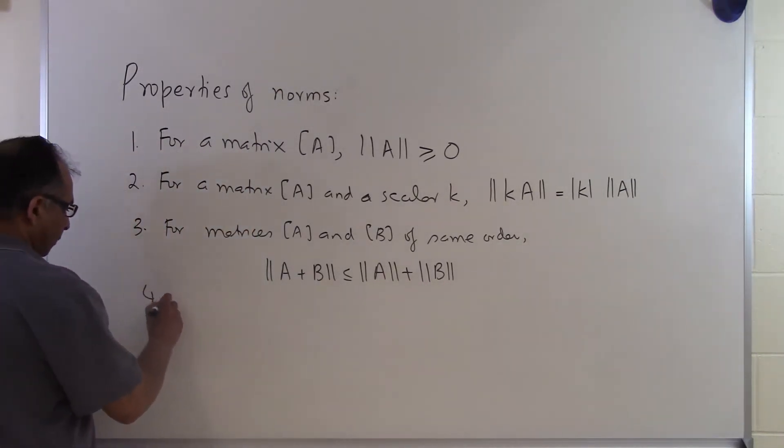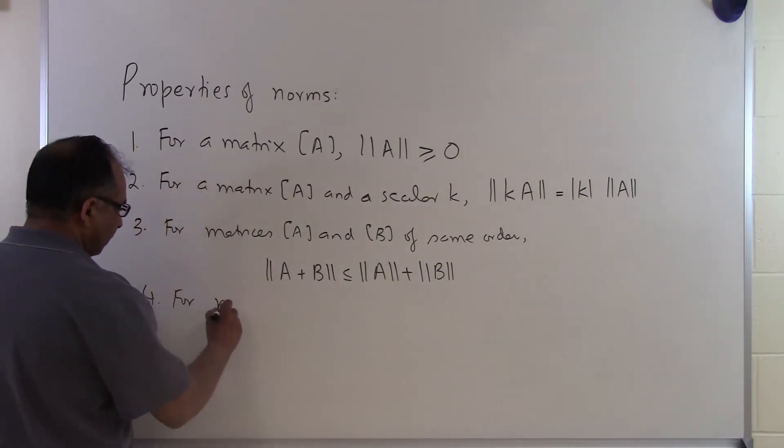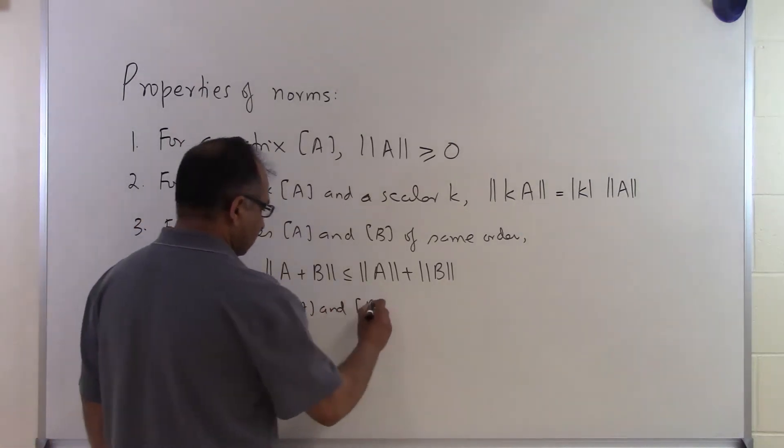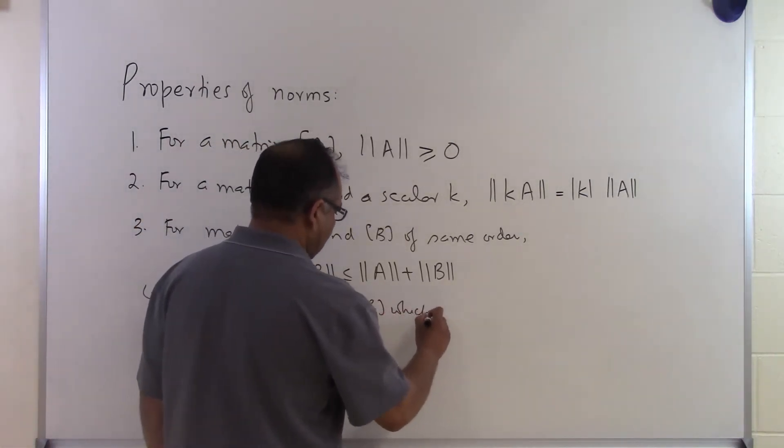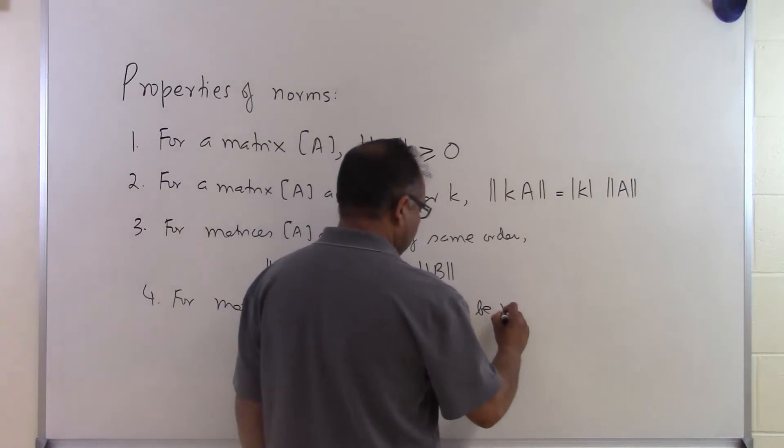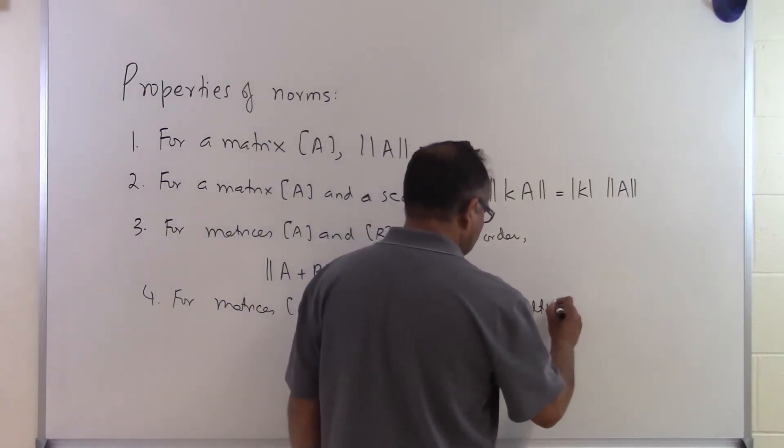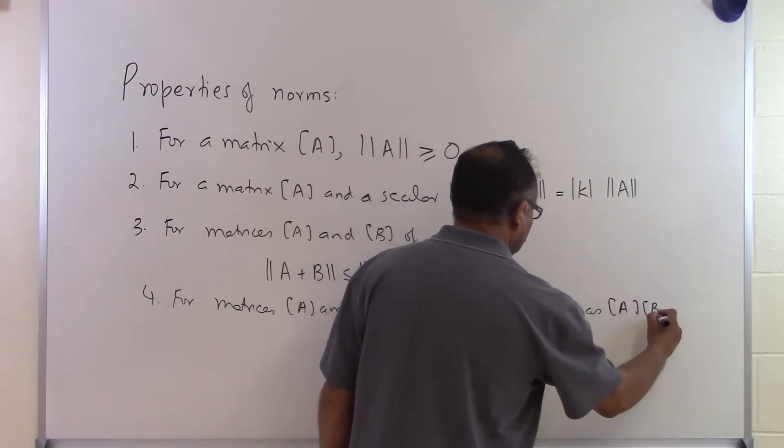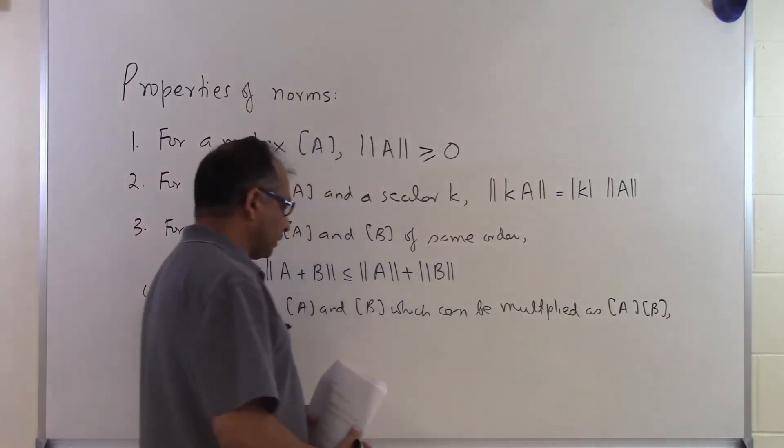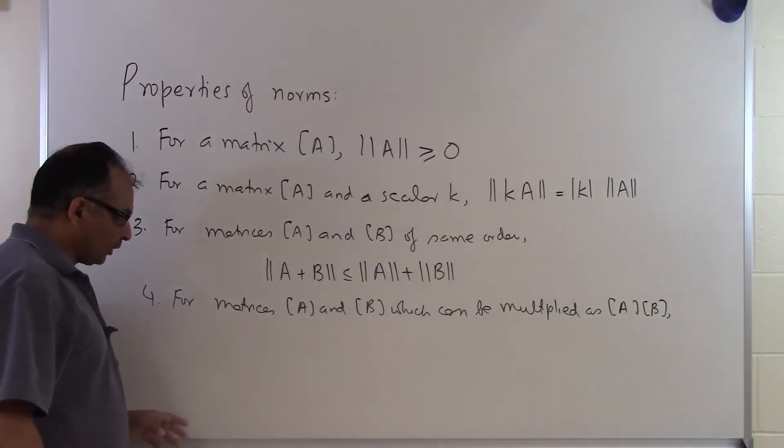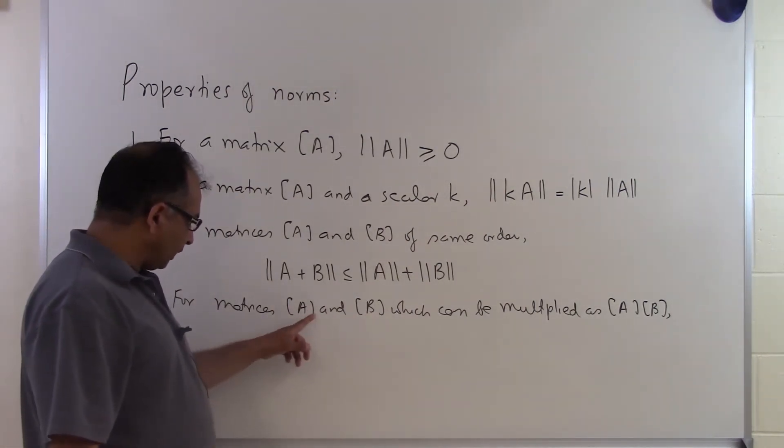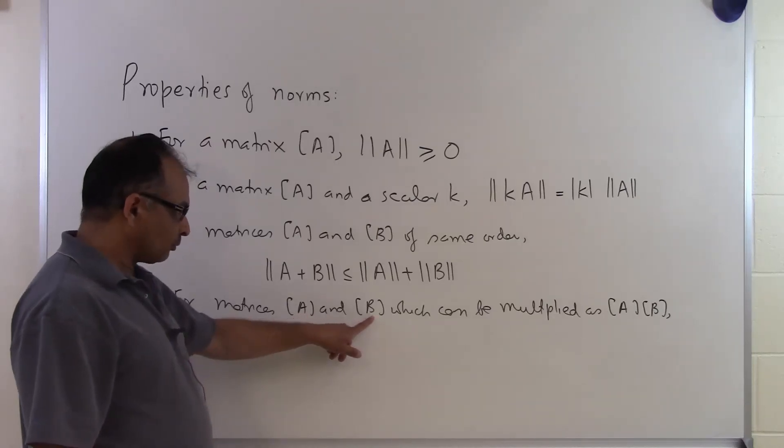The fourth property is for matrices A and B which can be multiplied as A times B. What we mean by that is that we cannot multiply any two matrices. In order for A to get multiplied by B, for that to be legal is that the number of columns of A has to be the same as the number of rows of B.